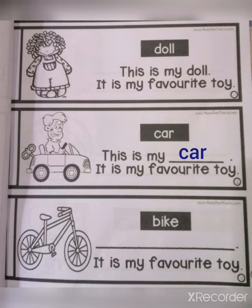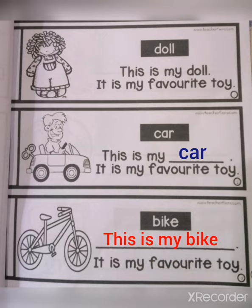Now, look at picture number 3. What's this? It's a bike. So, you're going to put 'This is my bike.' And then, we got the full sentences: This is my bike. It is my favorite toy.